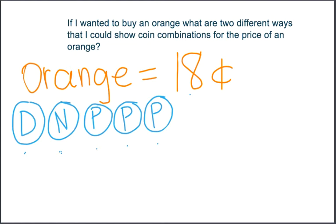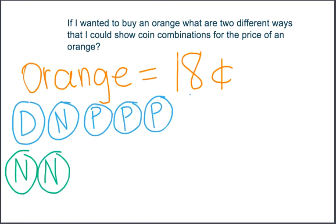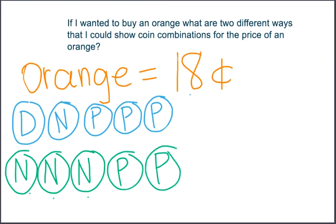How else can I show eighteen? I look at my dime and I know that a dime is made up of two nickels. So instead of drawing a dime, I'm going to write two nickels, plus my nickel from before. Now I have three nickels — five, ten, fifteen — then sixteen, seventeen, eighteen. So I have shown eighteen cents two different ways.